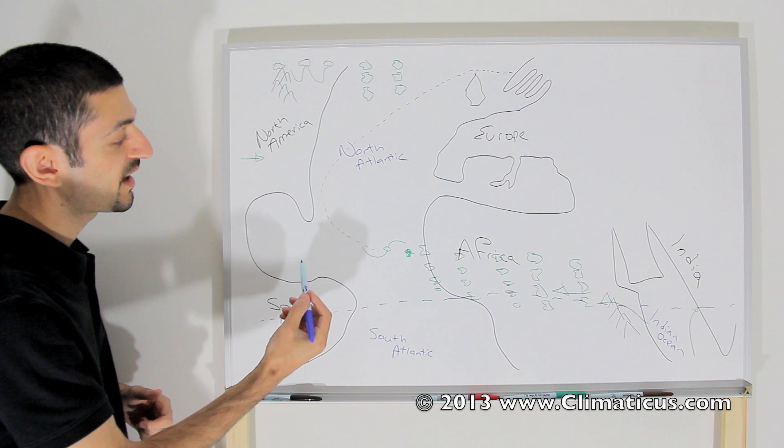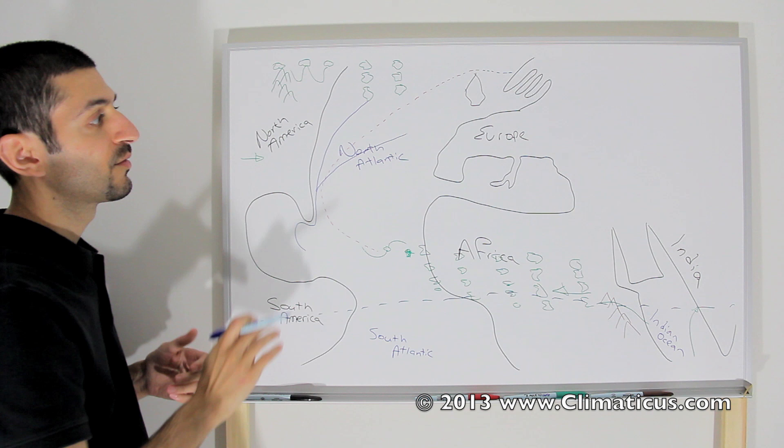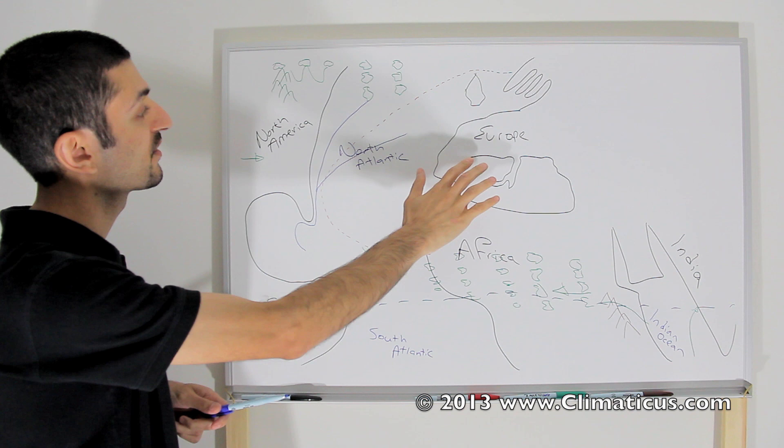But if you look at its path, what's interesting is the Gulf Stream comes around Florida and then it fans out. So you have a nice ocean current of water that helps regulate the climate of Europe. All this warmth keeps Europe at the same latitude as Canada, for example, warmer than Canada.